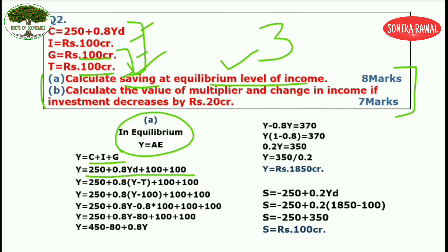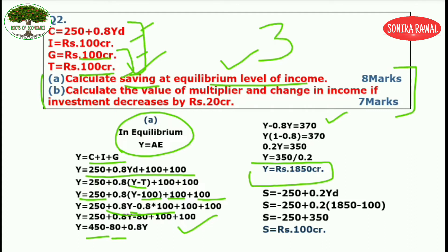Yd is Y minus T, and T (taxes) is given as 100. We have 100, 100 and 250 as values. We have 0.8 which will multiply with both Y and 100. Keep the minus sign, bring all Y terms to the left side, then add 250, 100 and 100 and subtract 80. Take the Y term to the left side, take Y common, and finally your answer comes out to be 1850 crores. Do not forget to write rupees and crores.